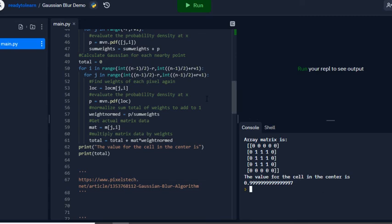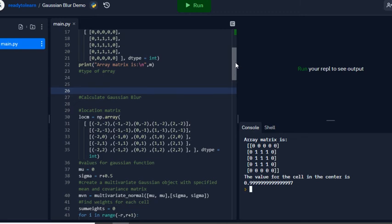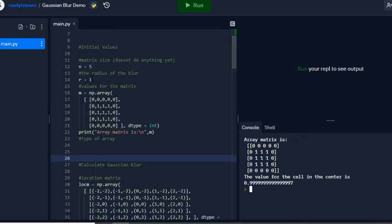If I'm using a Gaussian blur of one, a radius of one right now, and since it's a radius of one, it makes sense that the value would still be one. Because you're blurring it across the whole 3x3 section in the center, but that's all ones, so you're not blurring anything.